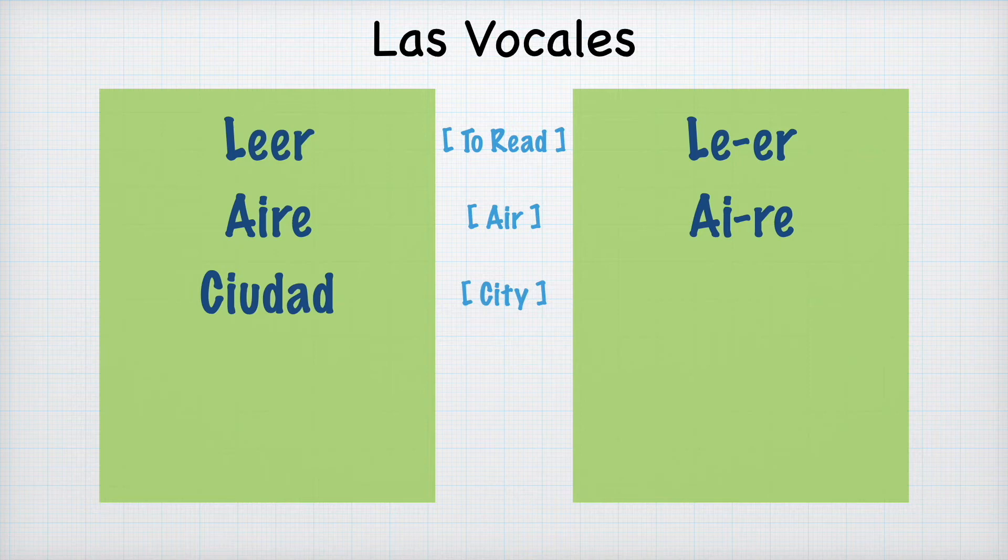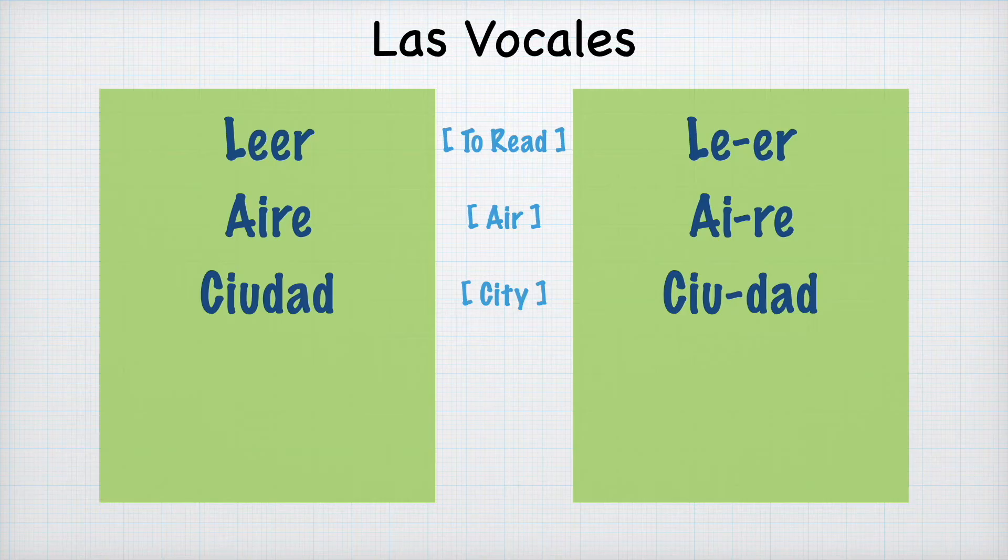Two weak vowels together are also part of the same syllable. For example, ciudad — we have I and U together, so they stay within the same syllable, and it's also a quick pronunciation. Ciudad.